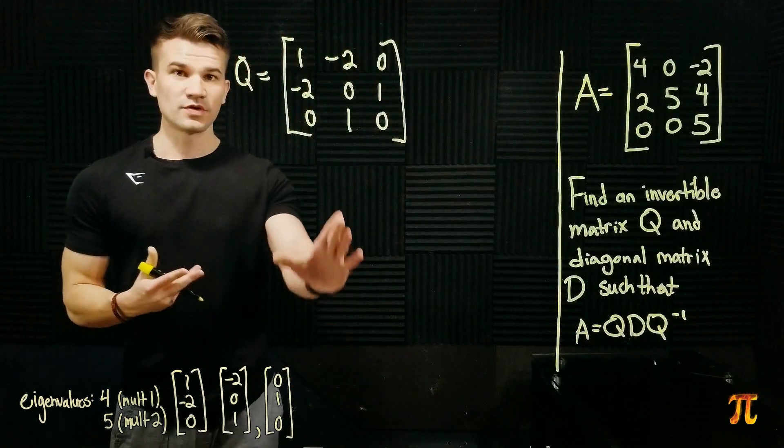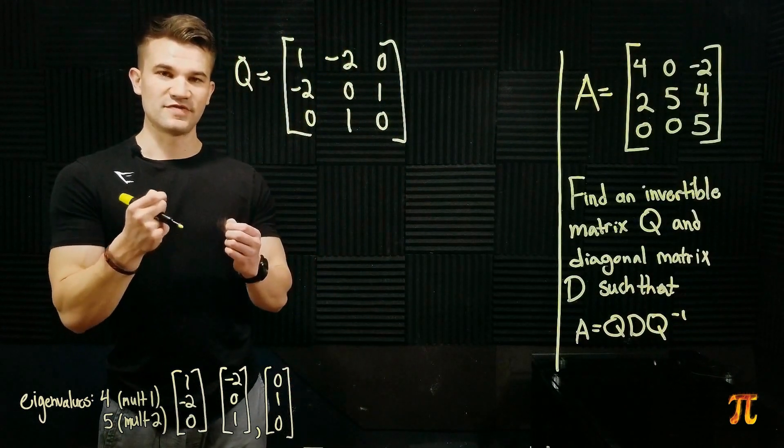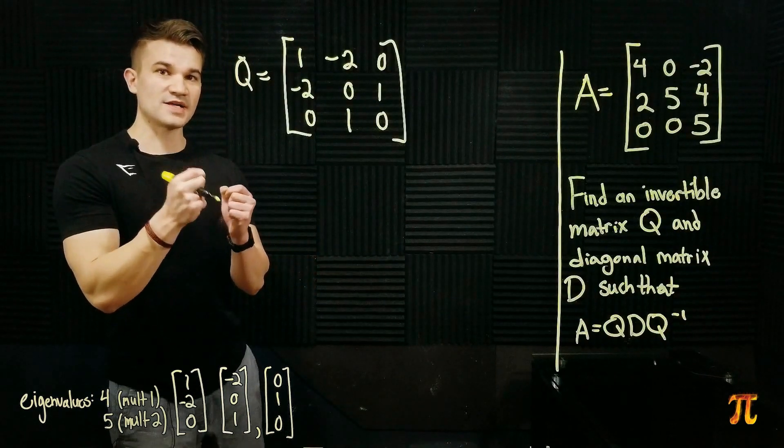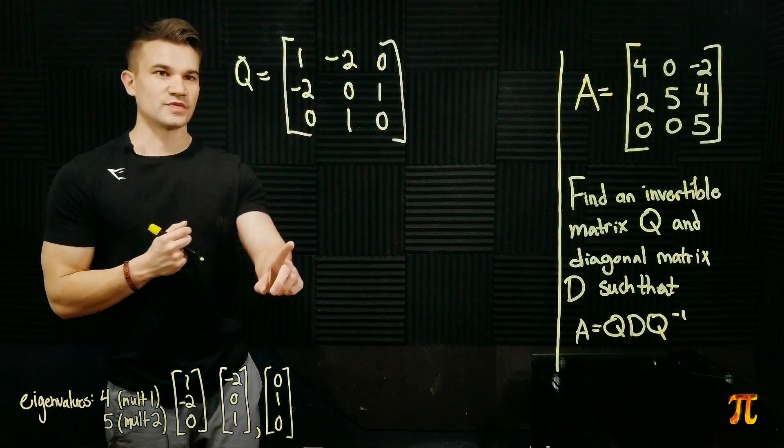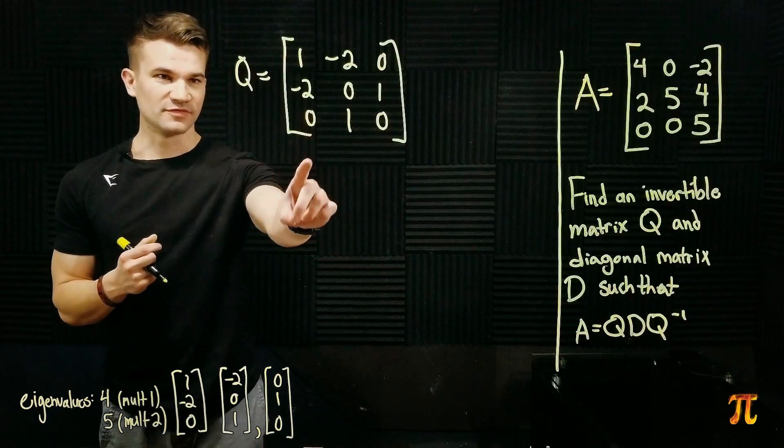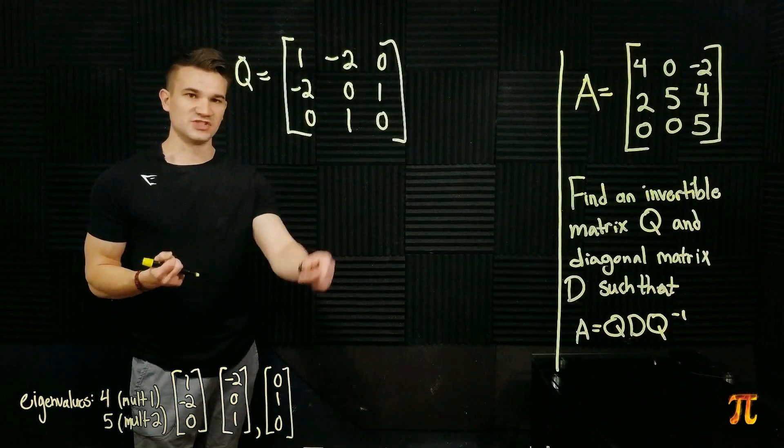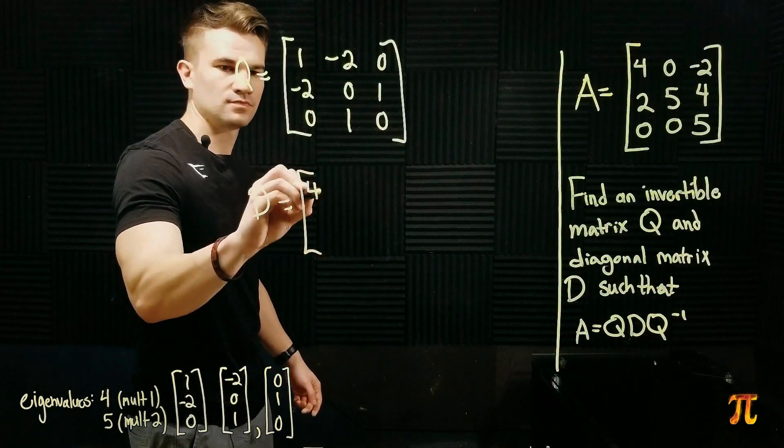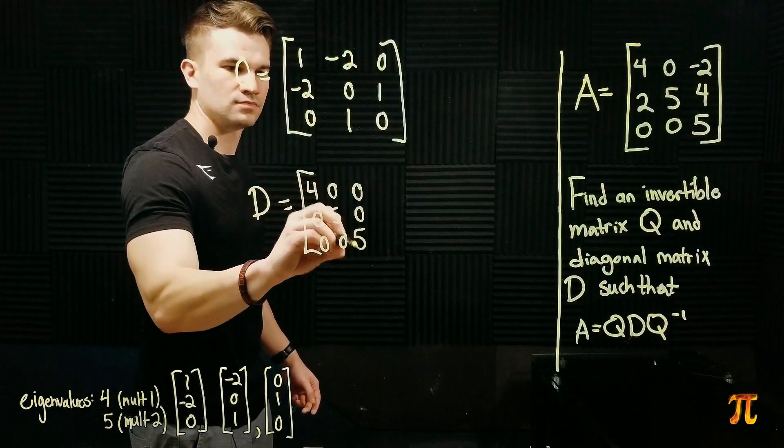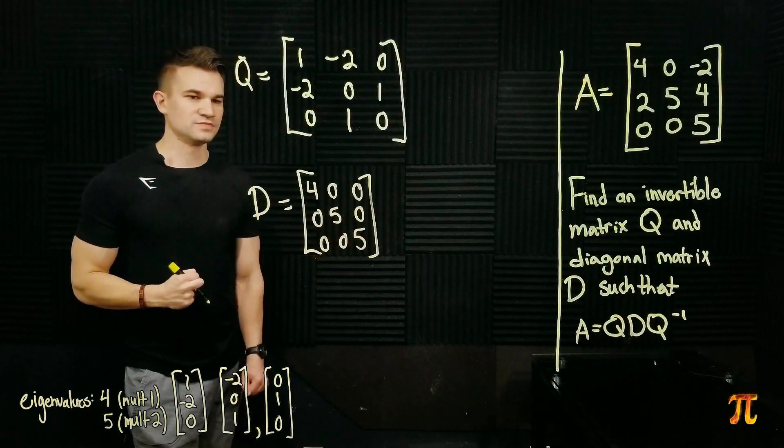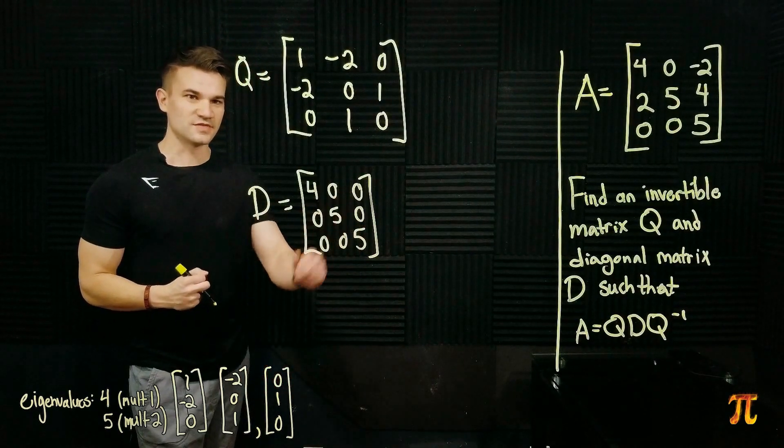So, here's the matrix Q. The order I chose is important because it's going to affect where the eigenvalues are along the diagonal. I picked the eigenvector for 4 to be 1st and then the 2 for 5 to be 2nd. So, the diagonal matrix D looks like this. And the expression that we want states the following.